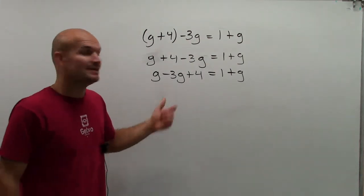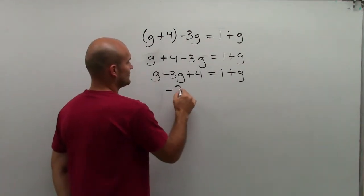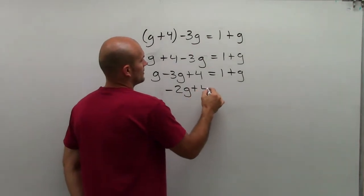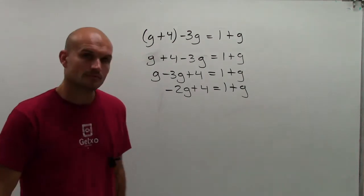Now I can combine these two terms. g minus 3g is negative 2g plus 4 equals 1 plus g.